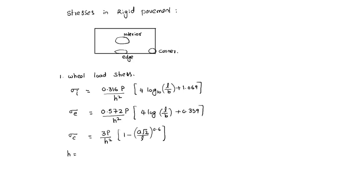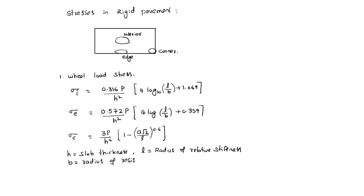Here, H is equal to slab thickness. L equals radius of relative stiffness. B equals radius of resisting section. A equals radius of the wheel load distribution.